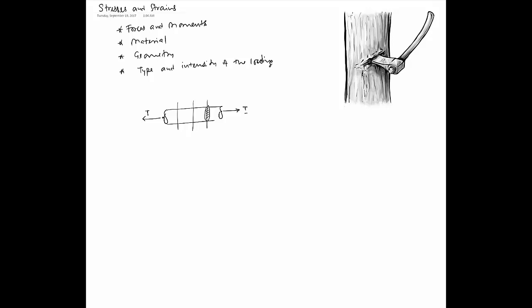If I draw a free body diagram of just this part from here to here, I have this end and then I have this end, so I have the tension T. If I want this piece to be in equilibrium then I know the tension here should also be T. This tension T is actually experienced by this entire cross section. It is distributed all over this surface area.